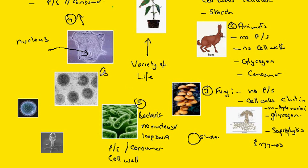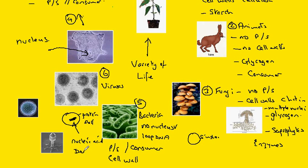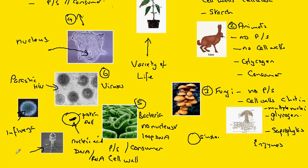And finally, group number six — controversial — the viruses. Are they actually living things? They show very few of the characteristics of life dealt with in 1.1. However, they do have on the outside a protein shell, and inside there will be a nucleic acid — either DNA or RNA. Many of these are parasitic. In this diagram here, we have HIV, influenza, and a very unusual virus which actually infects bacterial cells, called a phage. Very, very small organisms.